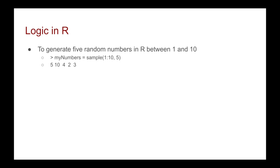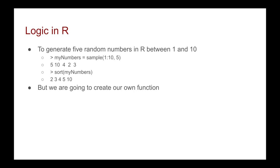2 and 3. We could use the R function sort(my_numbers) and we'd get 2, 3, 4, 5, and 10. But we are going to create our own function to try and mimic this.